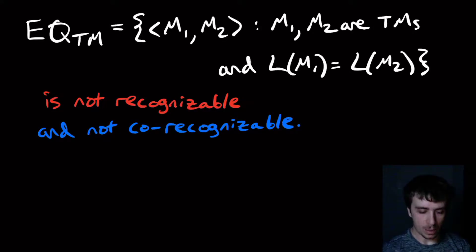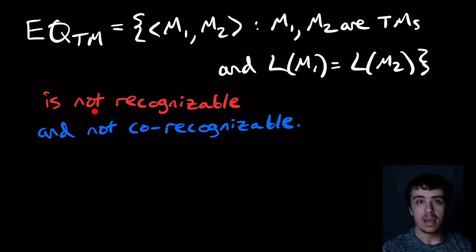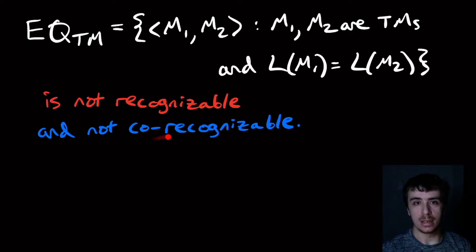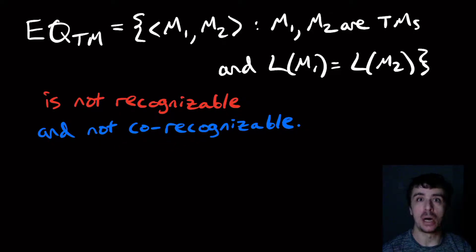Today we'll be looking at a problem asking whether EQTM is not recognizable and not co-recognizable. Co-recognizable means that its complement is not recognizable.